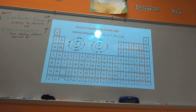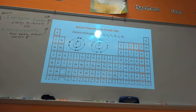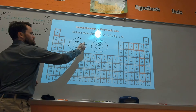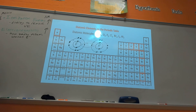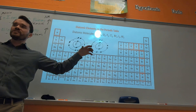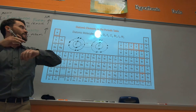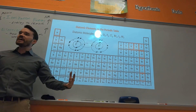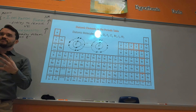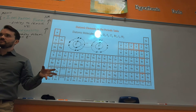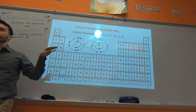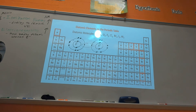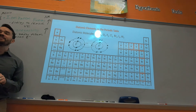Fluorine has two electrons in the first shell and seven in the second. If a fluorine atom could get one more electron it would have a full outside shell and be stable. So two fluorine atoms pair up and share electrons — it's like if they're each standing on one leg and lean on each other to have two legs between them. A single fluorine atom by itself is not very stable.